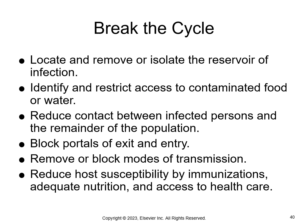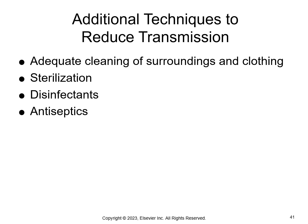This demonstrates the infection cycle and breaking the chain of infection. To break the cycle, we locate, remove, or isolate the reservoir of infection. Identify and restrict access to contaminated food or water. Reduce contact between infected people and the rest of the population — like quarantine — and stay home if you're sick. Block the portals of exit such as blood, saliva, or urine, and portals of entry like mucous membranes, blood, or inhalation, by wearing masks and covering breaks in skin. Remove or block modes of transmission by using the precautions we discussed. Reduce host susceptibility through immunizations, adequate nutrition and hygiene, and access to healthcare. Also make sure we adequately clean our surroundings and clothes — take your uniform home and wash it before putting it on again.